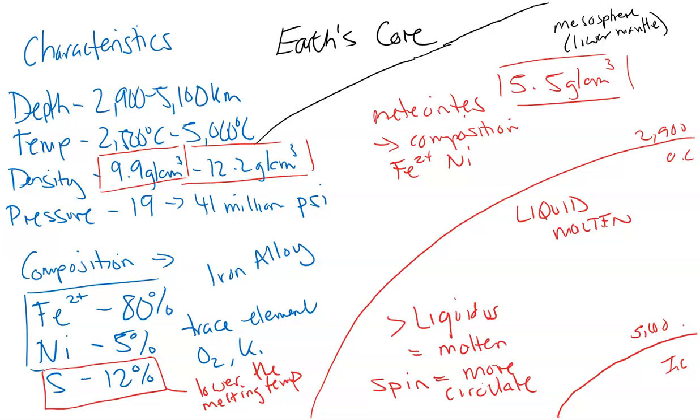However, the average is 5.5. Now, the mantle is the largest by volume, 85% volume, yet it's around 3 to 5 grams per centimeter cubed. That's the mantle. So how would the average be higher than that if the mantle is the majority volume?